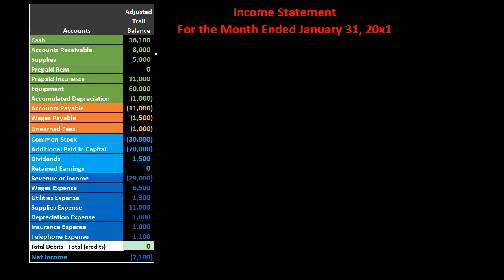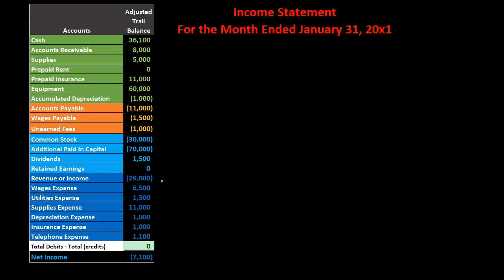For balance sheet accounts it doesn't matter whether we have one month, one year, or the entire life of the company, because it's always going to be as of a point in time. Whereas for the income statement it does matter — we need to know if it's for a month or a year, because these are performance numbers.